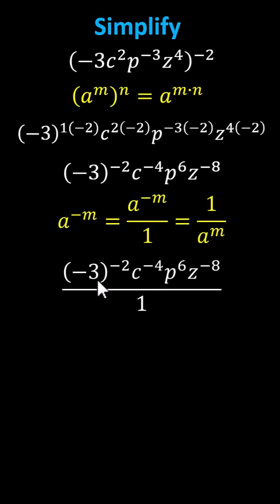Now if we move negative 3 to the power of negative 2, c to the power of negative 4, and z to the power of negative 8 to the denominator, the sign of the exponent changes.